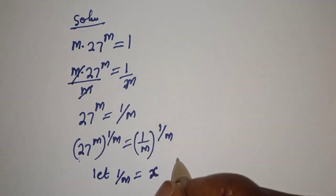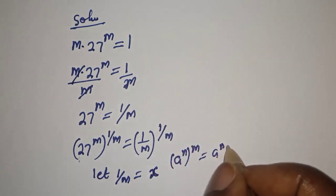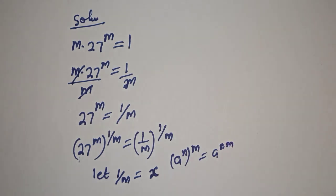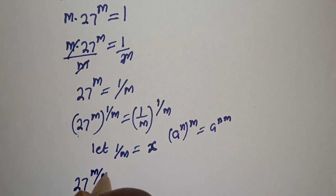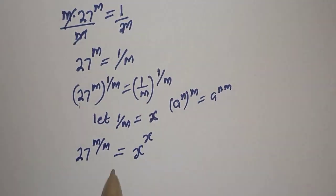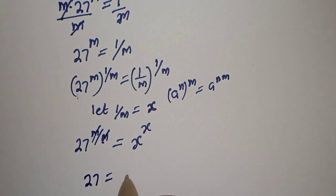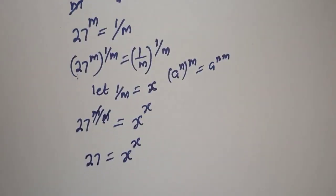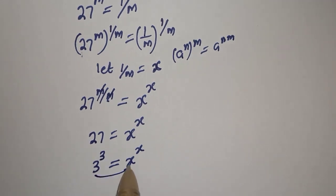Using the rule that a raised to power n, to the power of m, equals a raised to power m·n, we get 27 raised to power m over m is equal to s raised to power s. The m's cancel, so 27 equals s raised to power s. Since 27 is 3 raised to power 3, we have 3^3 equal to s^s.